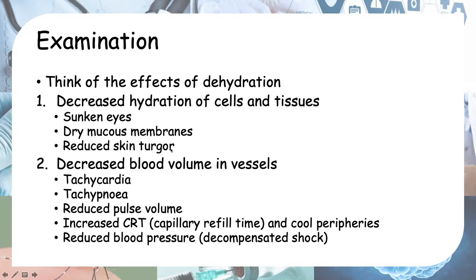Now for decreased blood volume: the body is smart and tries to compensate, so you'll see increased heart rate — tachycardia — and faster breathing — tachypnea. Even with tachycardia, each heartbeat pushes less volume of blood, so you get reduced pulse volume, which feels like a weak and thready pulse.